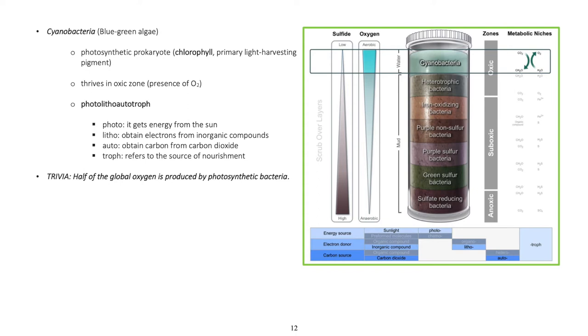Cyanobacteria: Photosynthetic prokaryote with presence of chlorophyll, the primary light harvesting pigment. Thrives in oxic zone with presence of oxygen. Photolithoautotroph - photo: gets energy from the sun, litho: obtain electrons from inorganic compounds, auto: obtain carbon from carbon dioxide, troph: refers to the source of nourishment. Trivia: Half of the global oxygen is produced by photosynthetic bacteria.